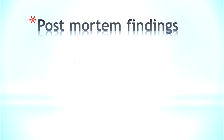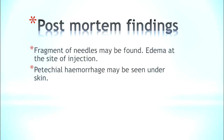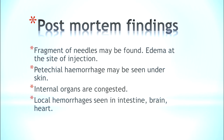Post-mortem findings: fragments of the needle may be found in, on, or under the skin. Edema, swelling, ecchymosis, inflammation, and necrosis of muscle can be seen at the site of injection. Petechial hemorrhages can also be seen under the skin, internal organs are congested, and local hemorrhages may be seen in the intestine, brain, and heart.